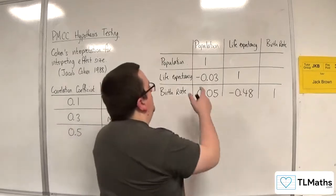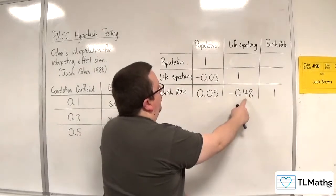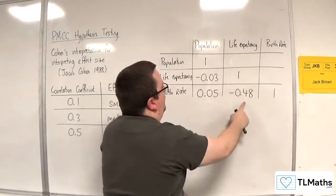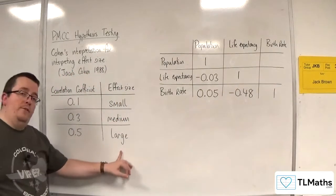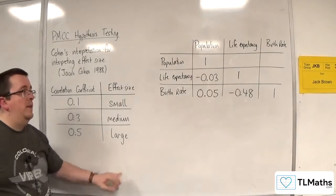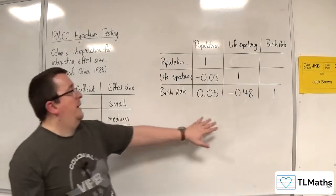Whereas because you've got minus 0.48 here between birth rate and life expectancy, because that's quite close to the 0.5 effect size, that means that there's a large effect size here.